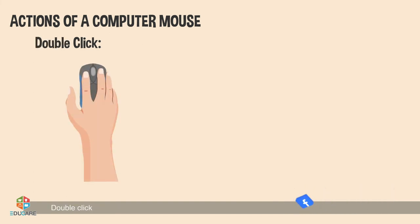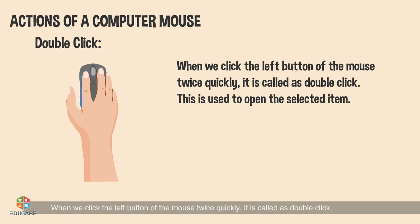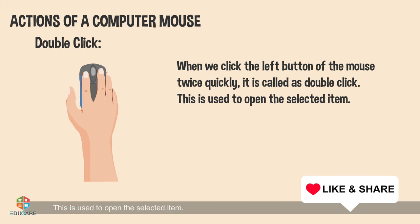Double click: When we click the left button of the mouse twice quickly, it is called a double click. This is used to open the selected item.